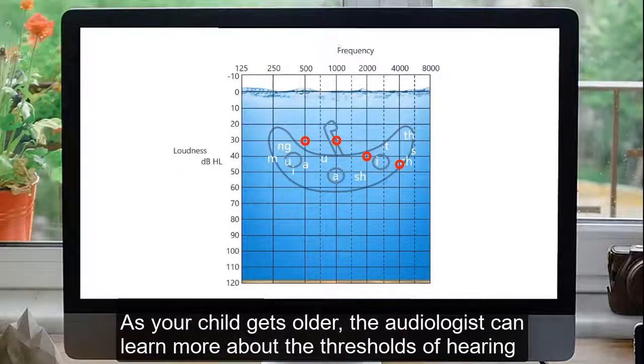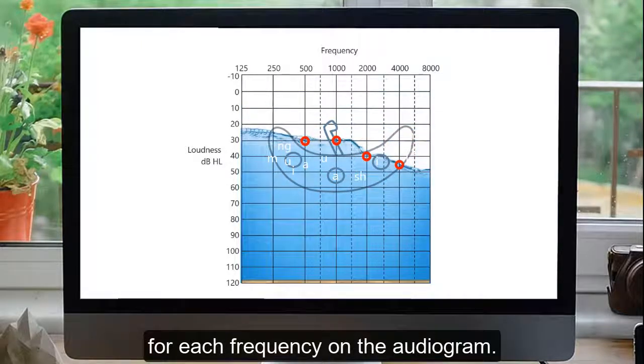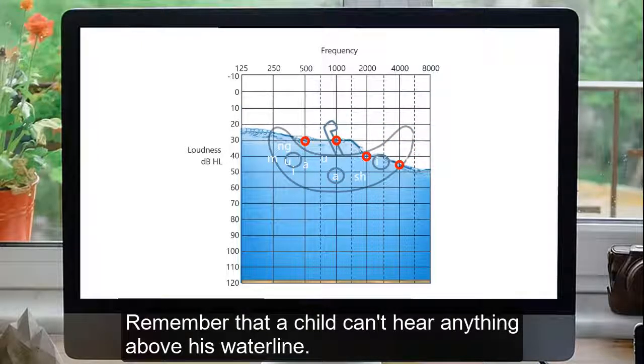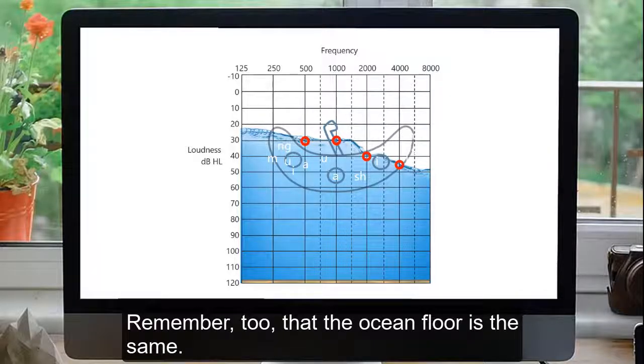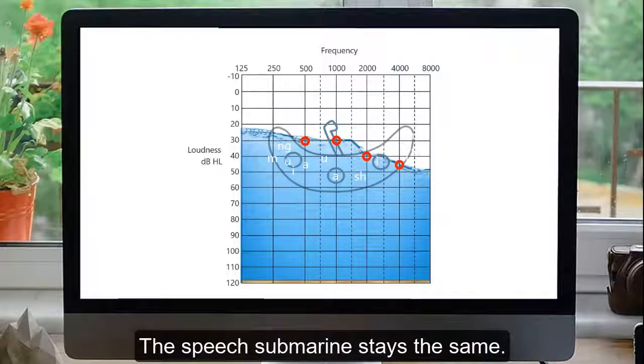As your child gets older, the audiologist can learn more about the thresholds of hearing for each frequency on the audiogram. Remember that a child can't hear anything above his waterline. Remember, too, that the ocean floor is the same. Going past this level could be uncomfortable. The speech submarine stays the same.